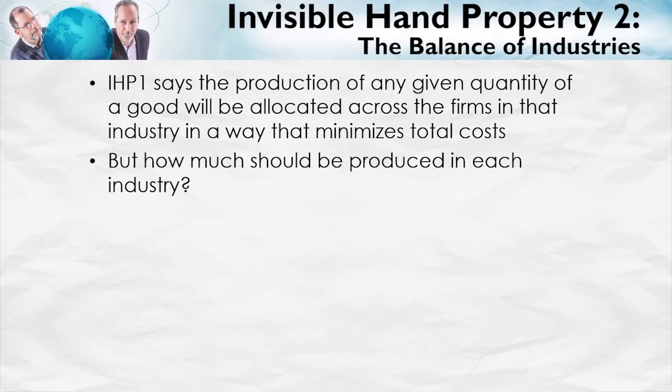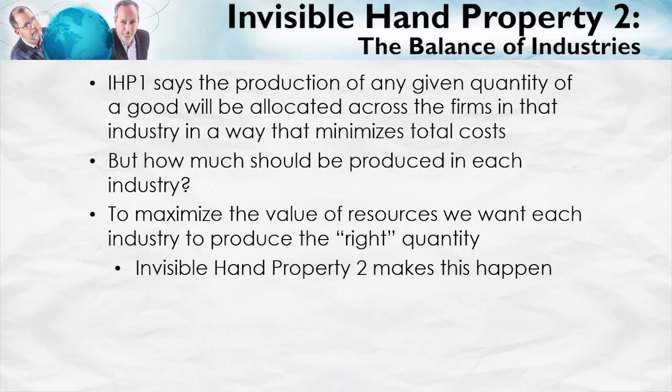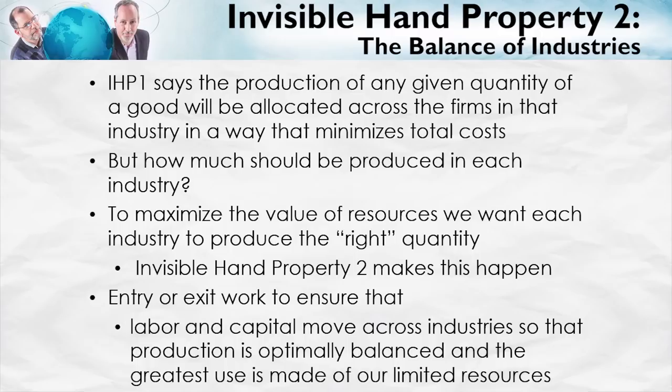In order to maximize the value of resources, we want each industry to produce the right quantity — not too much wheat and not too little wheat, but just the right amount. Entry or exit is what ensures that labor and capital move across industries so that production is optimally balanced and the greatest use is made of our limited resources.